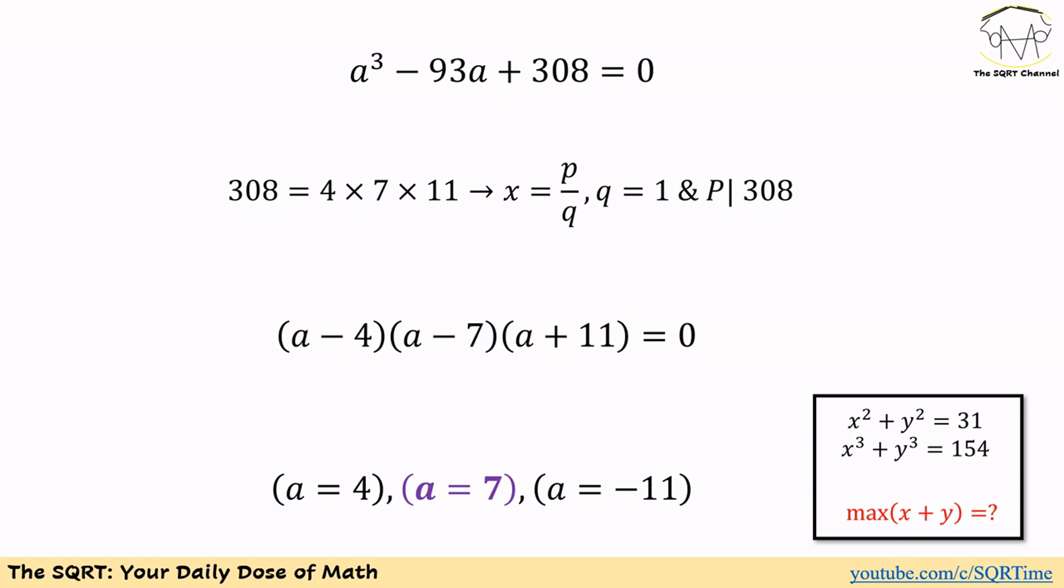We are going to start with a equals 4 as the root of this equation. If you try 4 you will verify that 4 is actually a root of this polynomial. The other value that we can try is 7 and you can verify that is the case here too. On the other hand, the last value that we are going to have is negative 11.